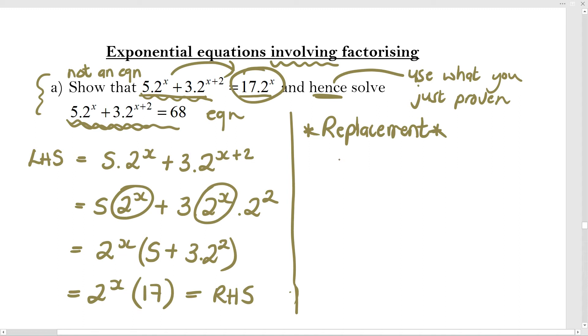So what I'm going to do now is replace my 5 times 2 to the x, that whole thing. I'm going to replace it with 17 times 2 to the x. And I'm going to say that equals 68. Now I need the 2 to the x by itself. I must isolate the thing with the exponent. So I'm going to divide both sides by 17. And 68 does divide by 17. It goes, 17 goes into 68 4 times, that bit I did on the calculator. And then of course this part's really straightforward. 2 to the x equals 2 to the 2. So x equals 2.